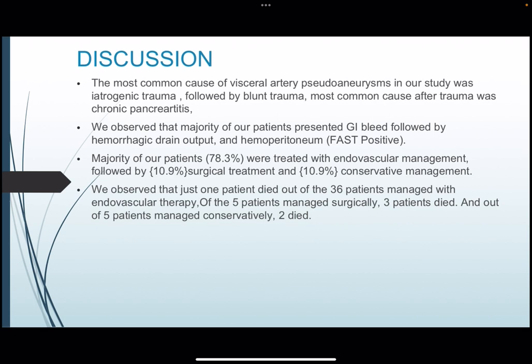In conclusion, the most common cause of visceral artery pseudoaneurysms in our study was iatrogenic trauma followed by blunt trauma. The most common cause after trauma was chronic pancreatitis. The majority of patients presented with acute GI bleed, followed by hemorrhagic drain output and hemoperitoneum. Endovascular management achieved a 97.2% success rate with significantly lower mortality compared to surgical and conservative management.